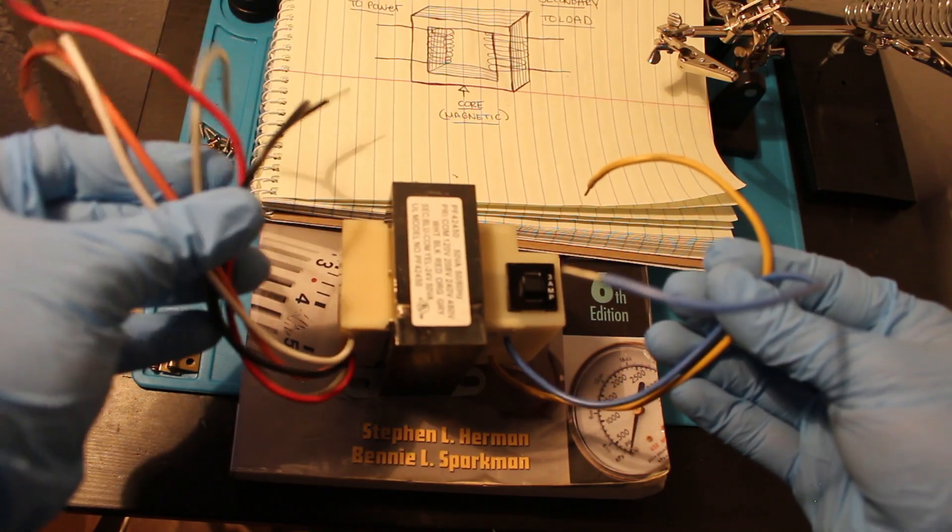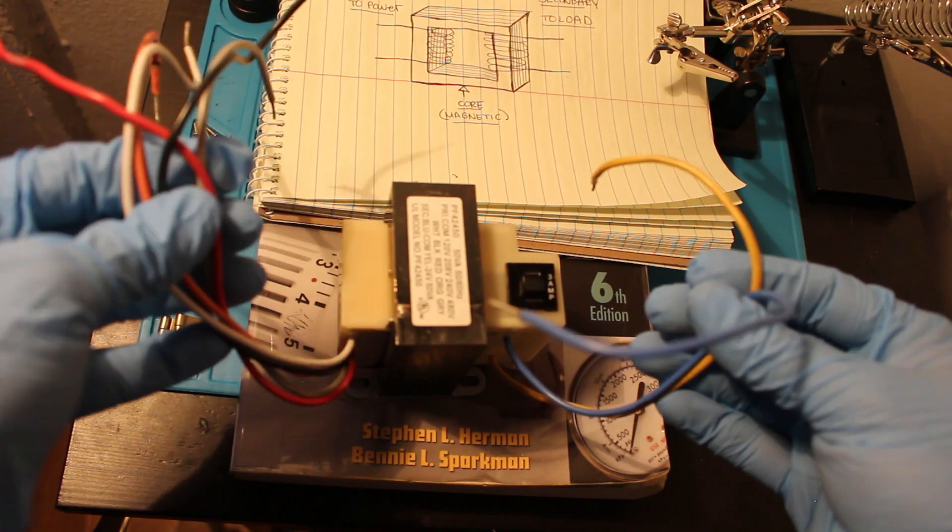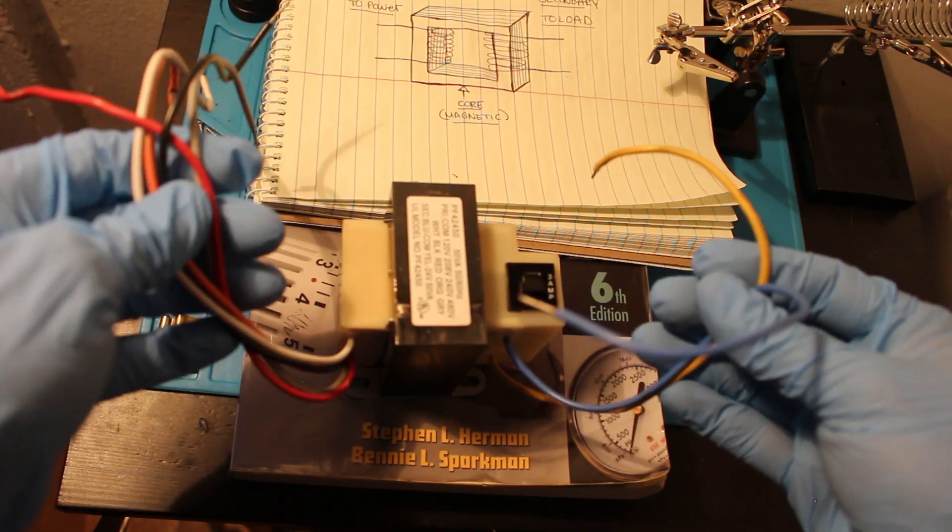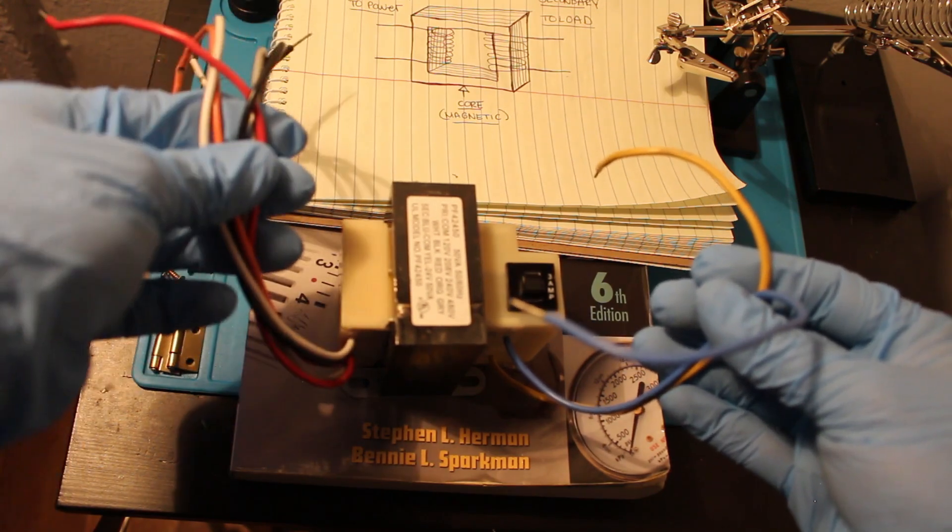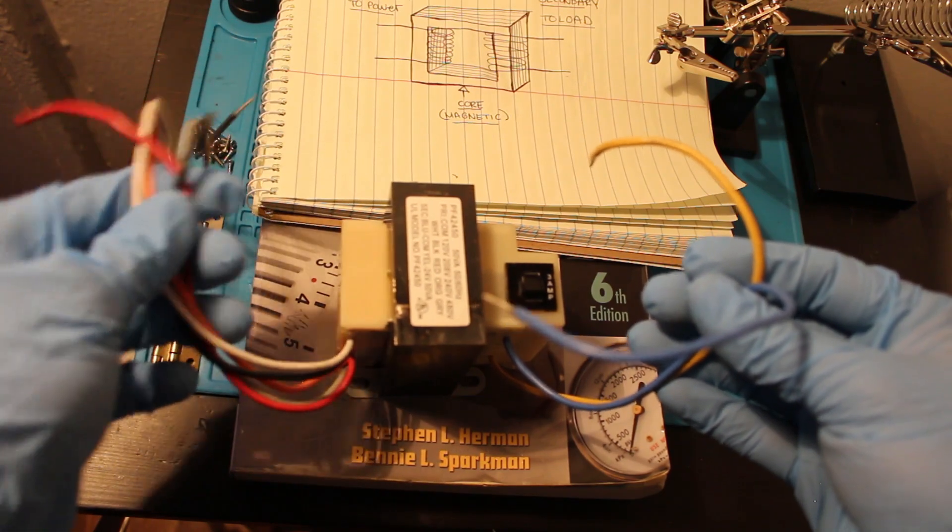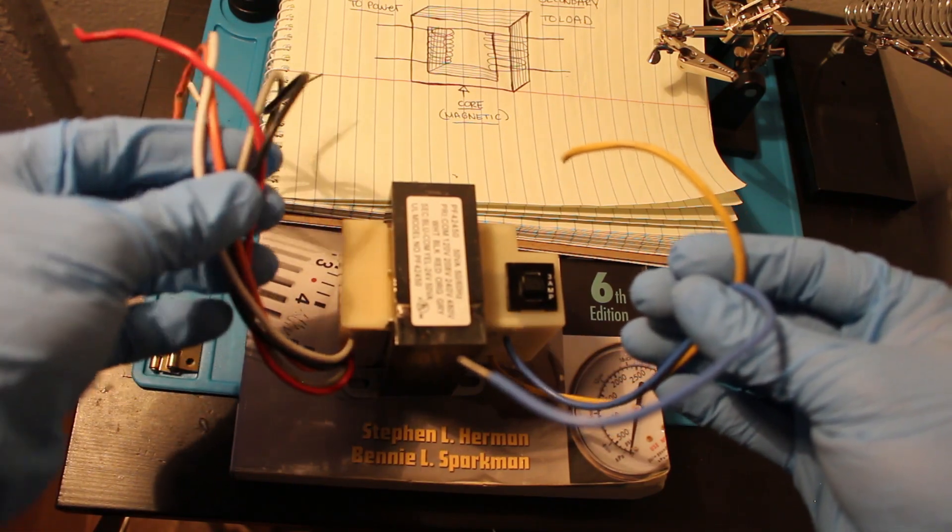There are many wires for the primary because you can choose your voltage: either 120, 208, 240, or 480 with this transformer. They are labeled by color.